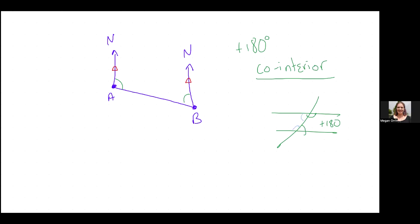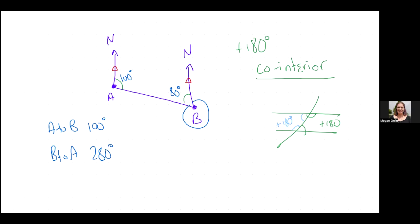These co-interior angles are inside the same parallel space — they add to 180. So if the bearing from A to B is 100 degrees, this co-interior angle is 80 degrees. But for the bearing from B to A we must go clockwise from North, so we want the reflex side: 280 degrees.